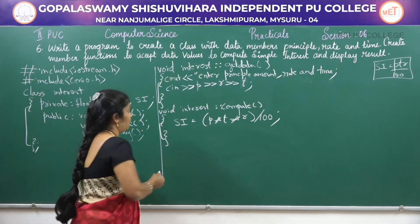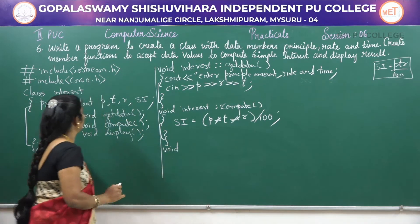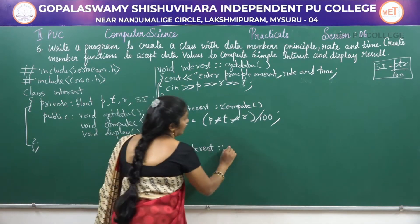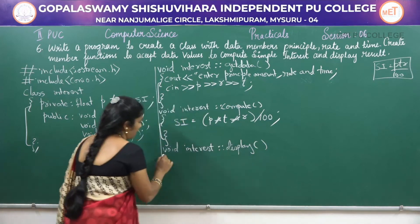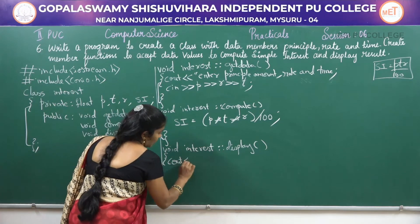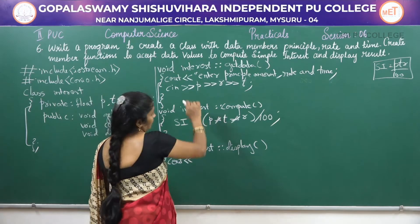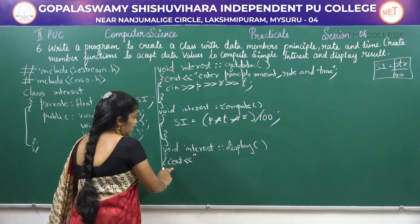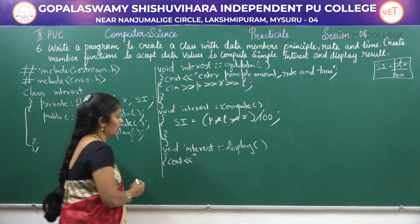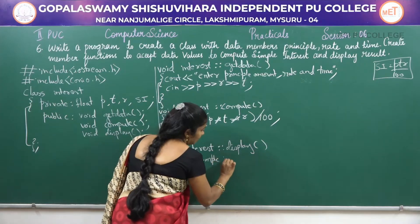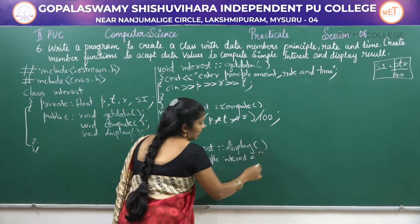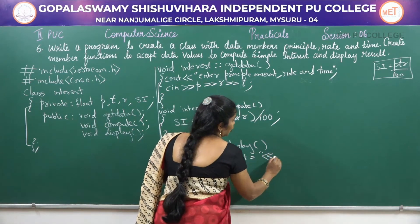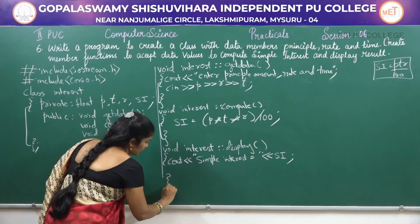The next function we have to write is the display function. That is void interest::display(). Inside the display function, we use cout with the insertion operator to display 'simple interest equals' inside double quotes, and then display the value of SI using the insertion operator. Then close the display function.